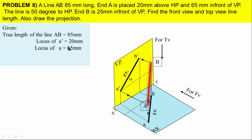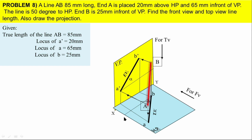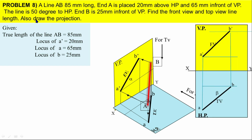The top view is projected in HP and this is our locus of A. One more locus detail is also given: end B is 25 mm in front of VP. That is the other end of the true line. Point B is 25 mm in front of the vertical plane. Whatever the 'in front of' detail with respect to VP will be projected in HP - that is small letter point b, which is the locus of B. The locus of B is very near to XY. The angle is also given.